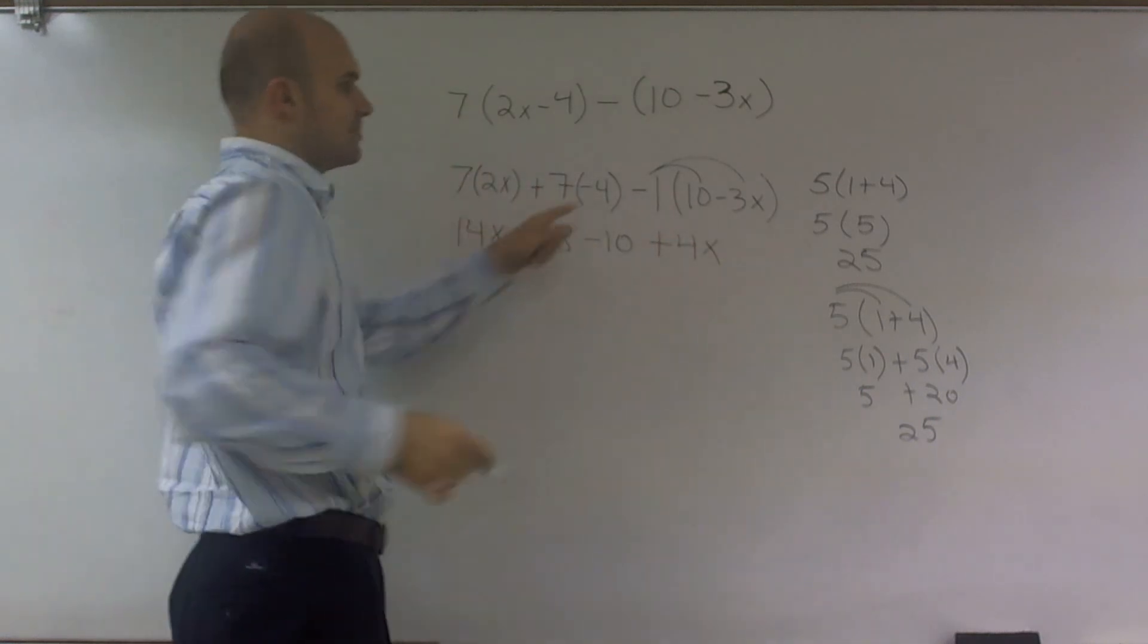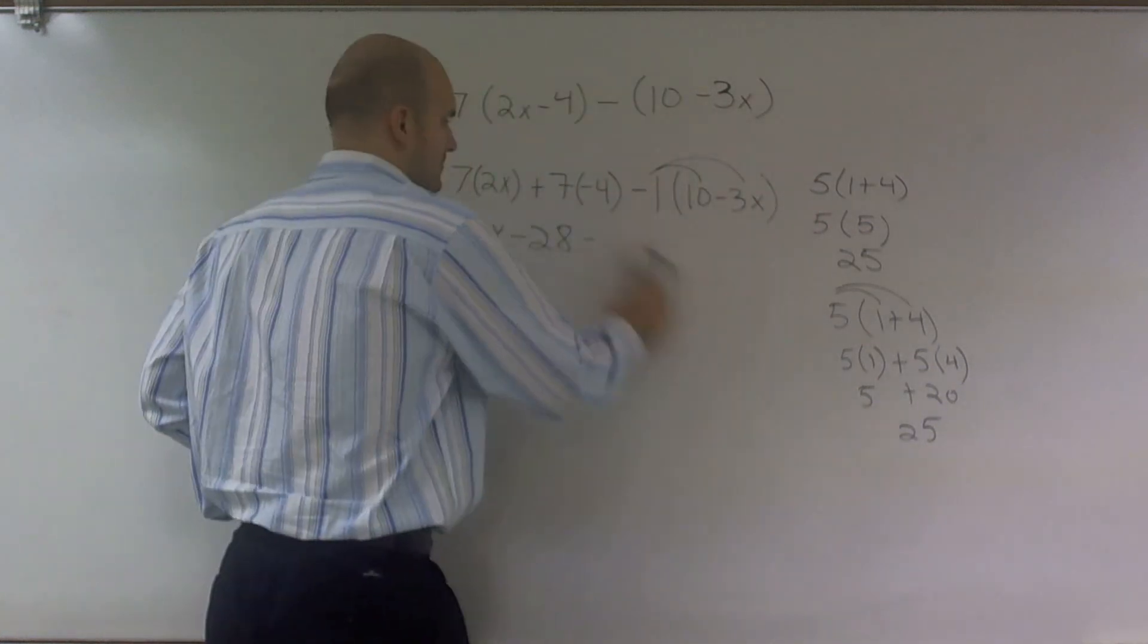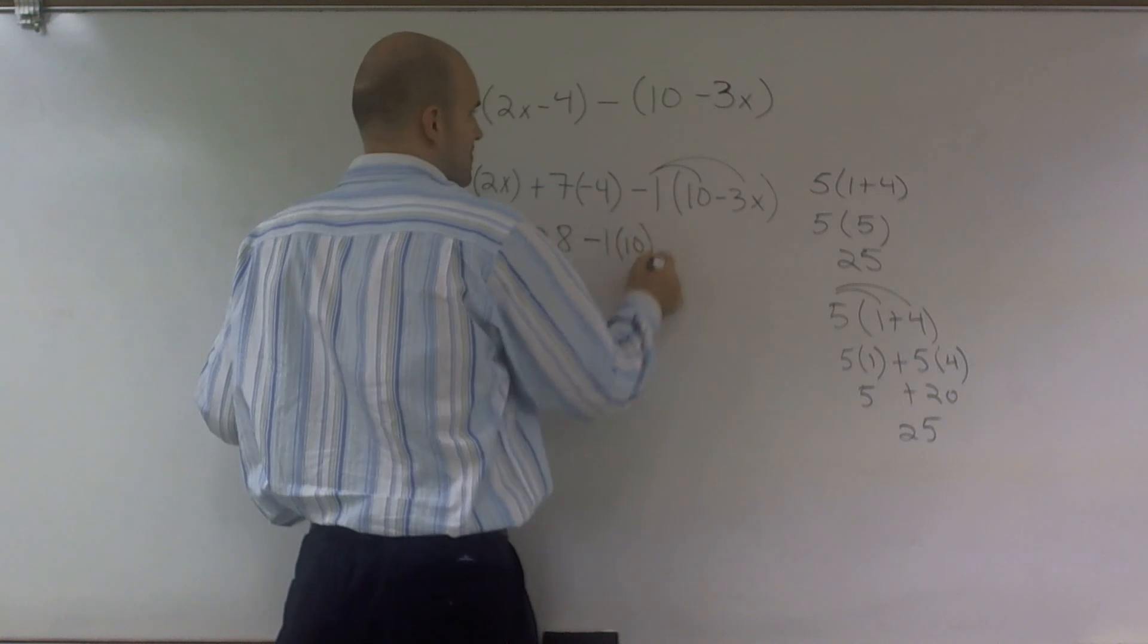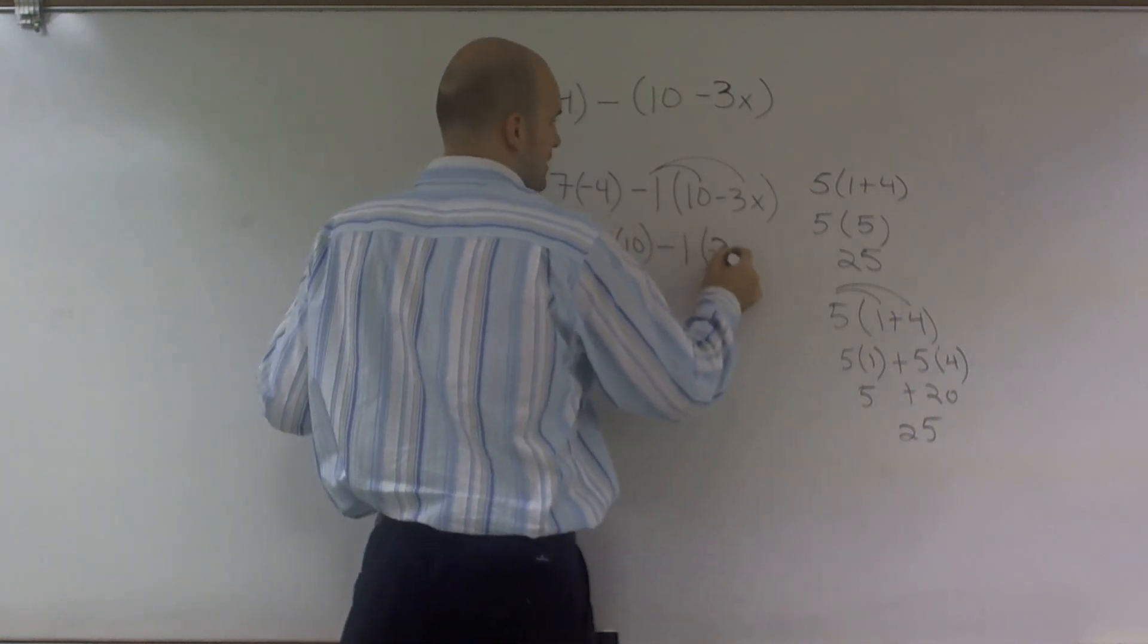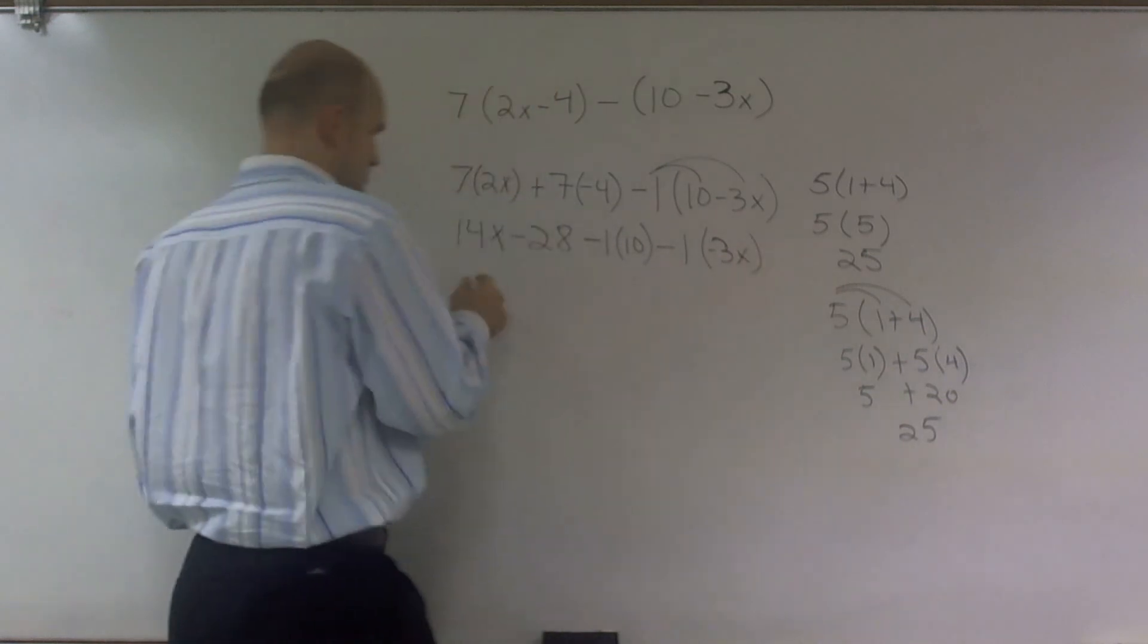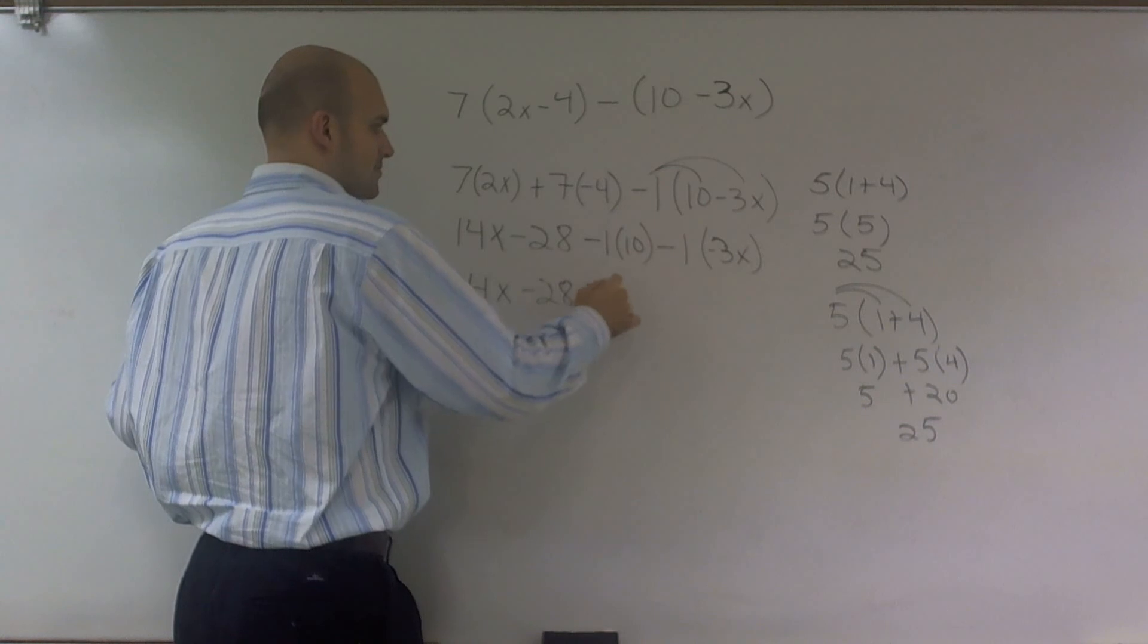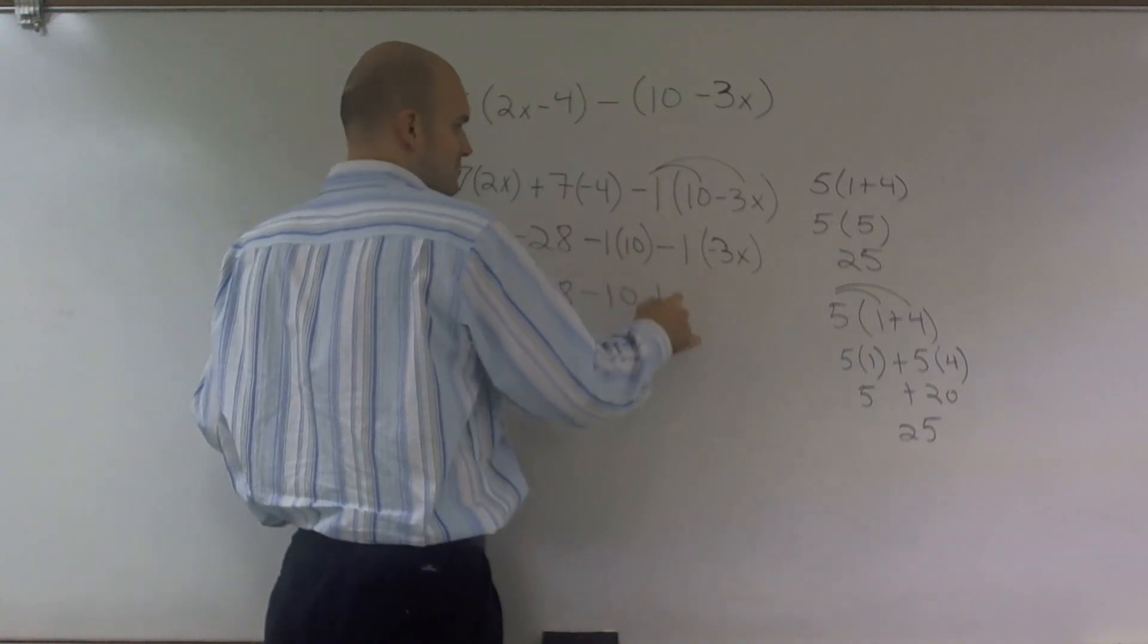Here, I kind of split it up. Not to confuse you, I'll do it again. This would be negative 1 times 10 and negative 1 times negative 3x. So I get 14x minus 28 minus 10, and this would be positive 3x.